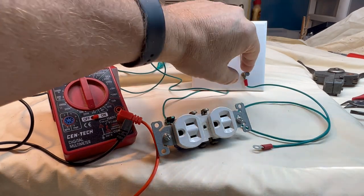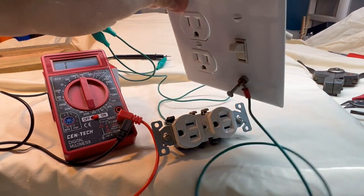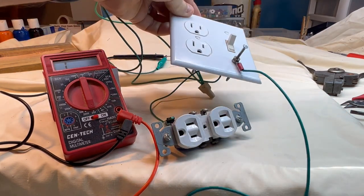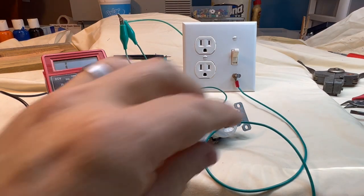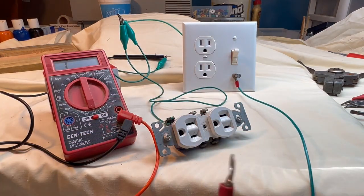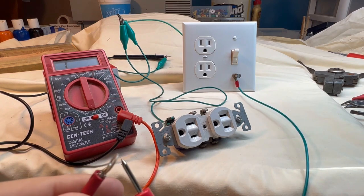So you stick a bolt in there, tighten that down. I put two nuts on there—one to tighten the plate and one to tighten the wire. And then you have a connection and you get your ground.